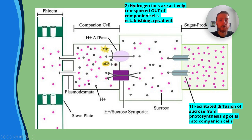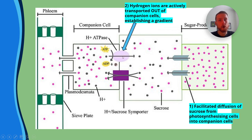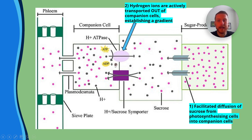Next, hydrogen ions are actively transported out of companion cells, establishing a gradient. The carrier protein is the only type of protein involved in active transport, and we can see ATP being hydrolyzed to ADP plus inorganic phosphate as these hydrogen ions are transported out of the companion cell into the surrounding cell walls and tissue.